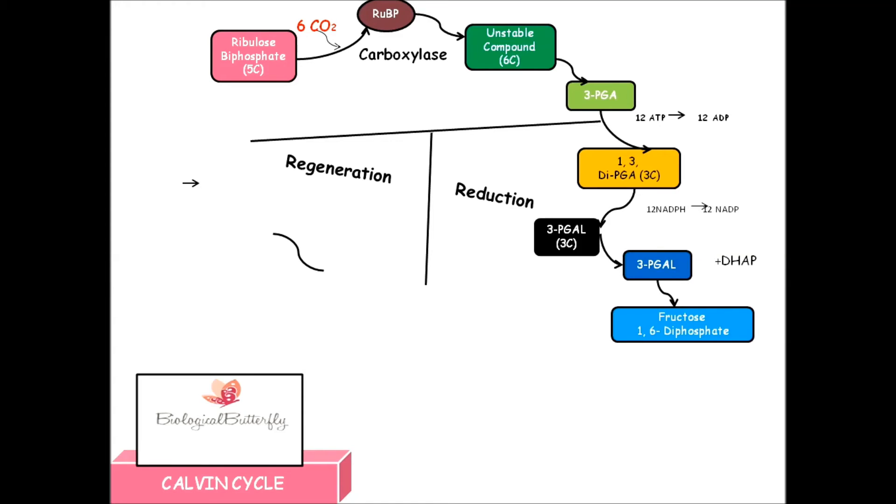Fructose 1,6-diphosphate undergoes dephosphorylation to form fructose 6-phosphate, which on isomerization forms glucose 6-phosphate. Glucose 6-phosphate undergoes dephosphorylation—meaning removal of a phosphorus group—to form glucose.